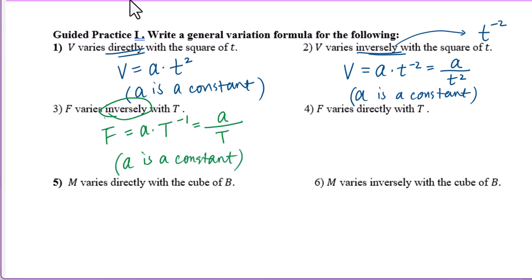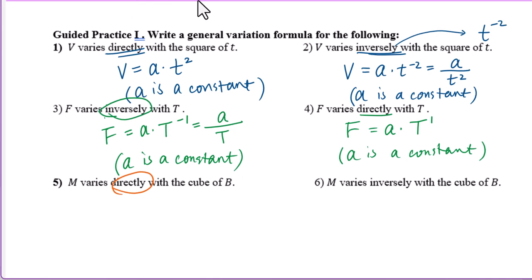Question 4: F varies directly with T. Directly means a positive exponent, so T to the first power. F equals A times T, where A is a constant. Question 5: M varies directly with the cube of B. Directly means a positive exponent, so B to the third power. M equals A times B to the third power, where A is a constant.